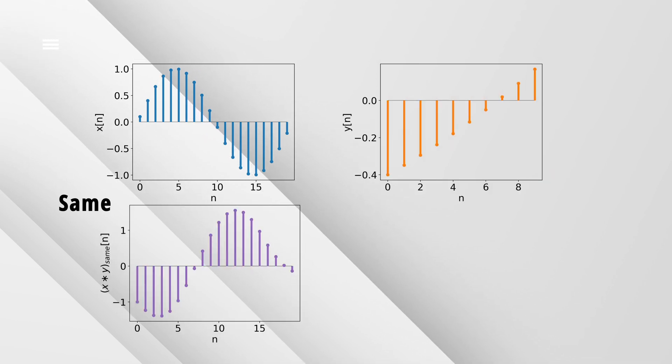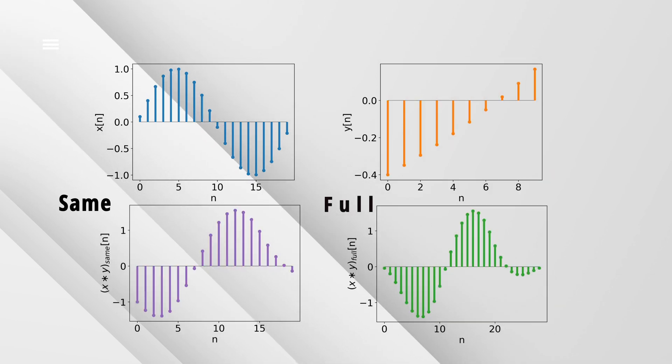So assuming that the filter has n coefficients, we need to append n-1 zeros at the end of the input signal. We can also insert zeros at the beginning of the input signal. Here's where the three modes of convolution come into play. If we don't insert any zeros at the beginning of the input signal and use this formula, we'll end up in the same mode of convolution. So the output will have the same number of samples as the input.